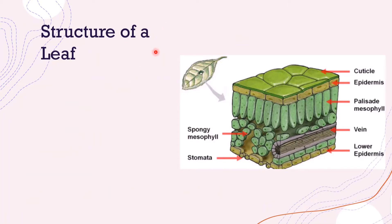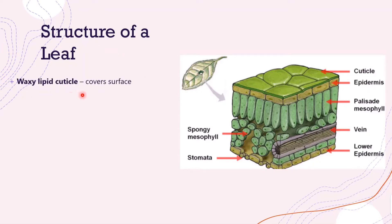Now we're going to look at the structure of a leaf before we look at how that makes for effective gas exchange. First, there is the waxy lipid cuticle, which covers the surface of the plant.